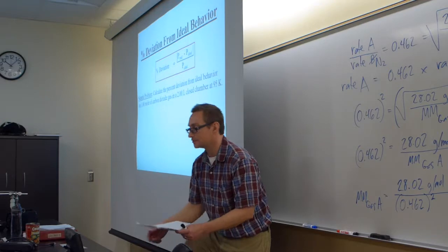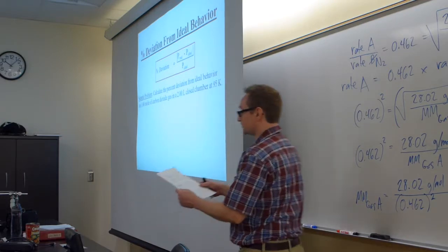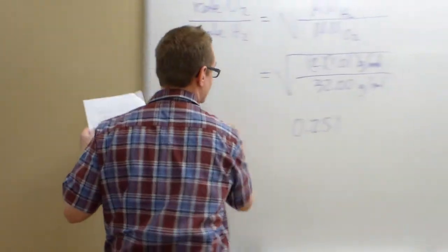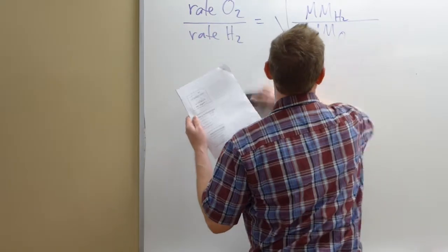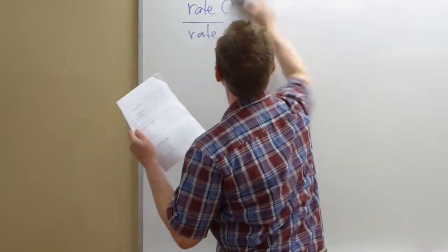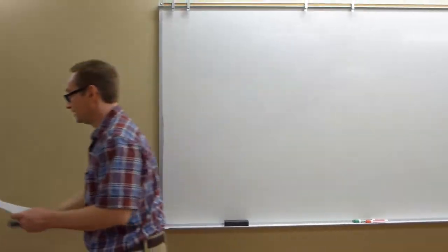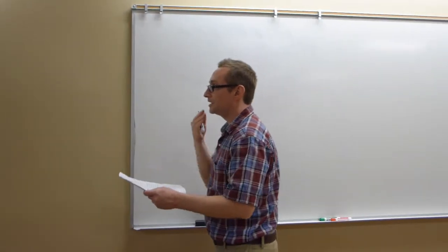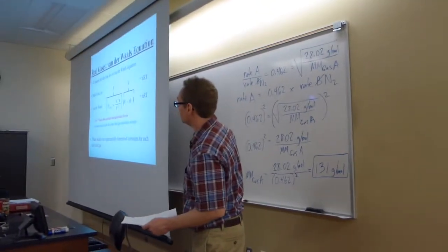So how do we calculate the percent deviation? This sample problem says calculate the percent deviation from ideal behavior for one mole of carbon dioxide gas in a 2.00 liter closed chamber at 95 Kelvin. So the strategy is we have to calculate both P ideal and also P real, and then we have to plug them into this percent deviation equation. How would we solve the Van der Waals equation for P real? Let's do some algebra.